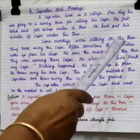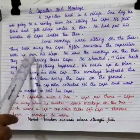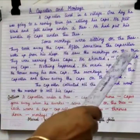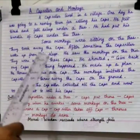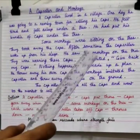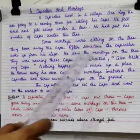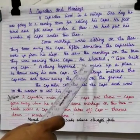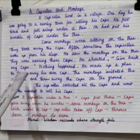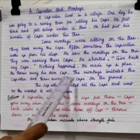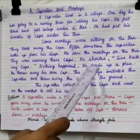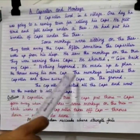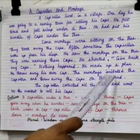After some time, the cap-seller woke up from his sleep. He saw the monkeys on the tree — they were wearing those caps. He shouted, 'Get back my caps!' Nothing happened, so he made up a plan. He threw away his own cap, and the monkeys imitated the cap-seller and threw away the caps on the ground.